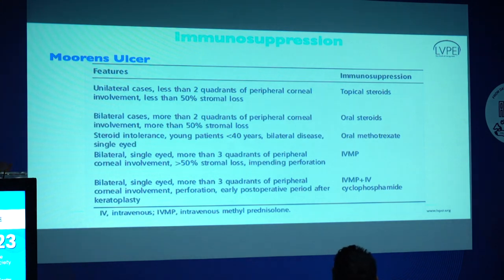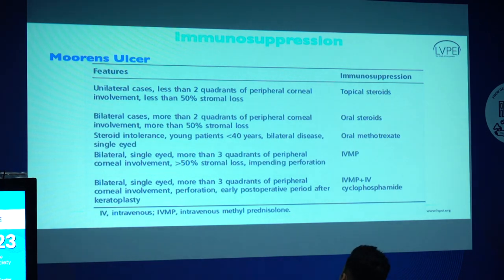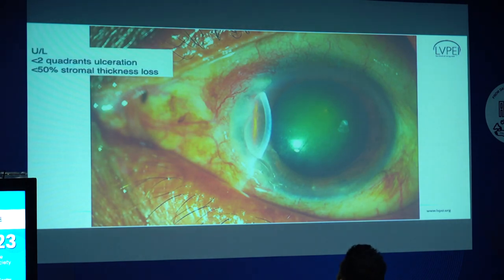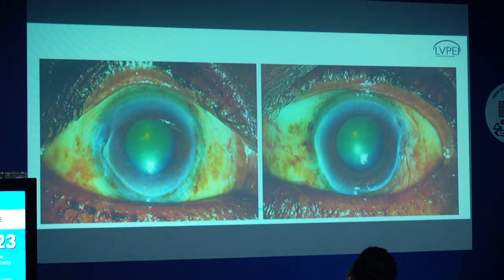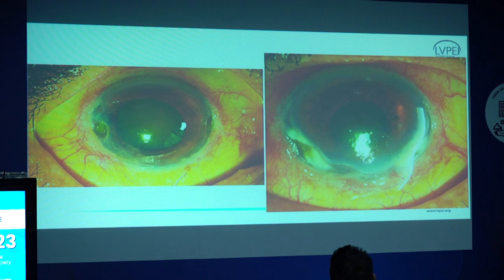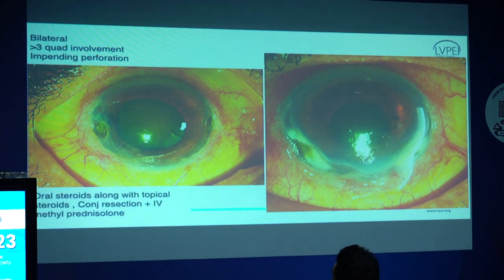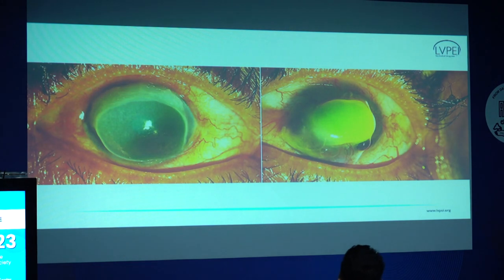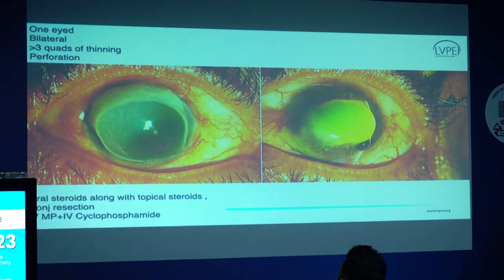Mooren's ulcer is another condition we come across frequently, and we follow a stepladder pattern. Mostly bilateral cases with more than two quadrants of involvement require systemic immunosuppression; otherwise we can manage with topical steroids, conjunctival resection, and subconjunctival injections. For bilateral cases with more than two quadrants of thinning, we start with oral steroids. If there's significant thinning and melting with impending or actual perforation, we give IV methylprednisolone and immunosuppression. For recurrent cases, we switch to methotrexate or azathioprine. One-eyed patients are particularly tough, and when they've already had a melt, they may require IV methylprednisolone or even IV cyclophosphamide.